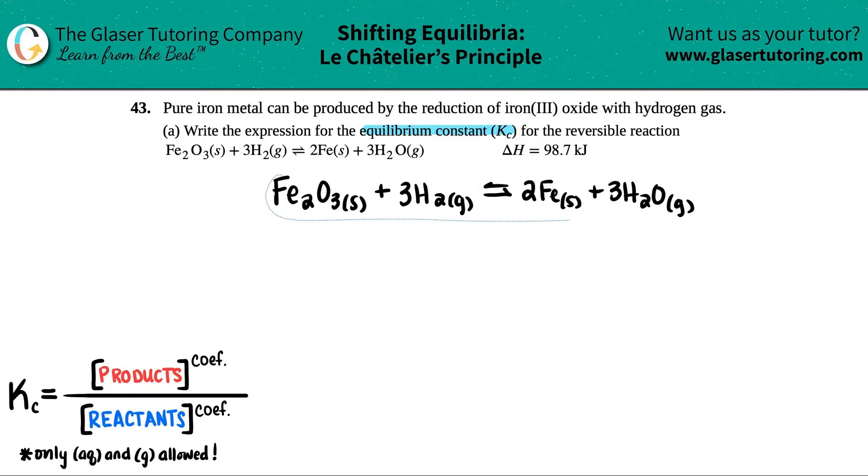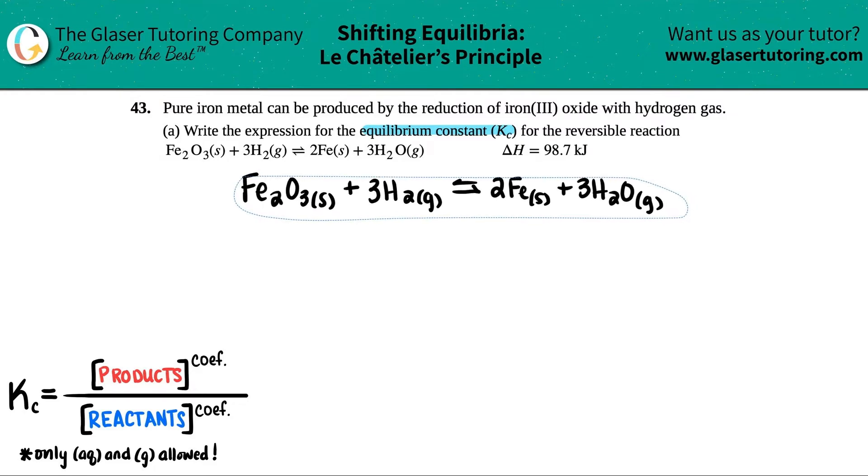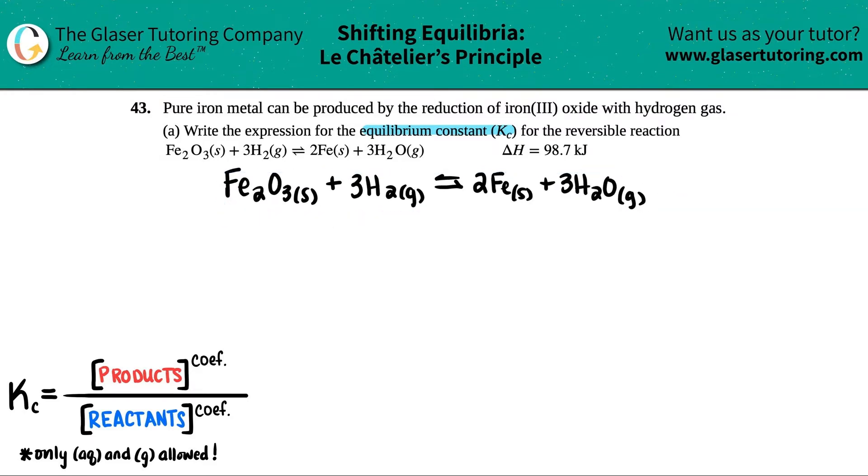Okay, so let's just center this a little bit. All right, so in this case we're just doing letter A. We just need to write the expression for the Kc value. We've done tons of work with this one, guys, right?